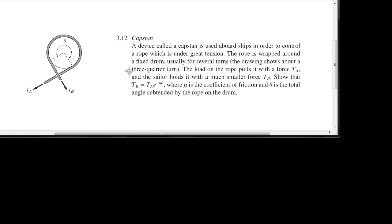We want to show that the holding force TB equals TA times e to the minus mu theta, where mu is the coefficient of friction and theta is the angle subtended by the rope on the cylinder.